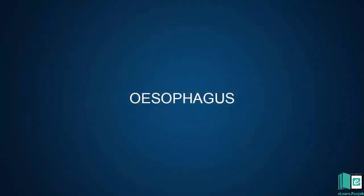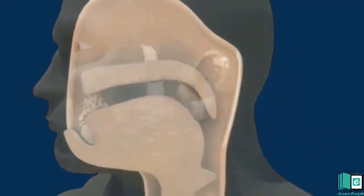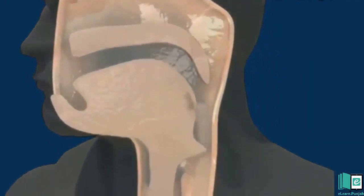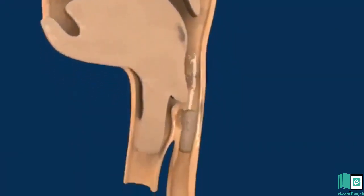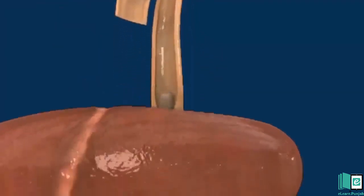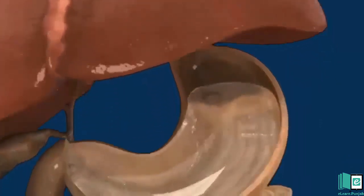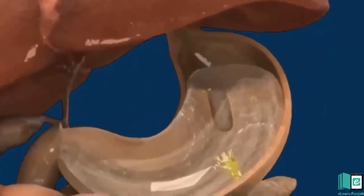The chewed food is then pushed from the mouth into the esophagus. The esophagus is a large tube that carries food from the mouth to the stomach. The esophagus uses wave-like muscular movements to push the food to the stomach. These wave-like movements are called peristaltic movements, and the process is called peristalsis.